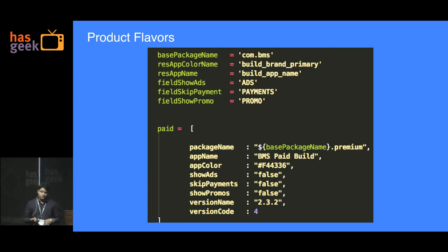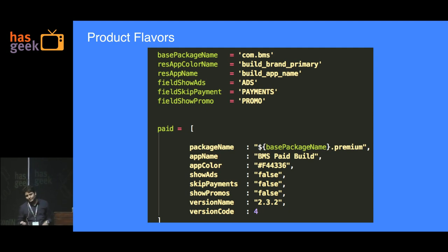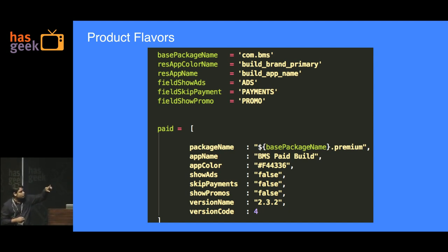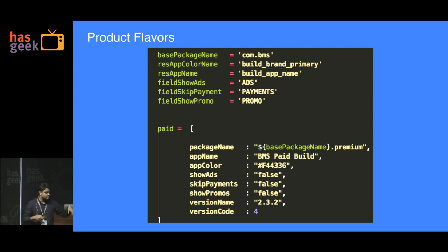That pain goes away. No longer do you need to maintain two different code bases just to hide ads or handle packaging differently. You define a product flavor — for example the paid flavor — and you can change the package name right away. So with a base package name like com.vms, you have configurable fields like ads, payments, and promo. In the paid version, show_ads is false, skip_payments is false, and show_promos is false.